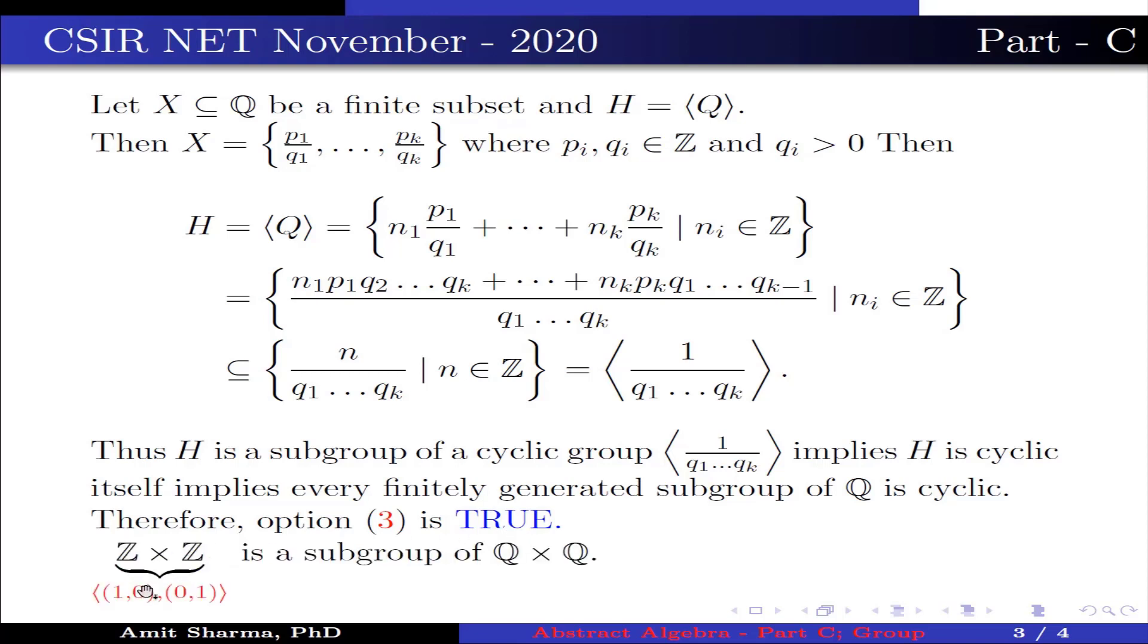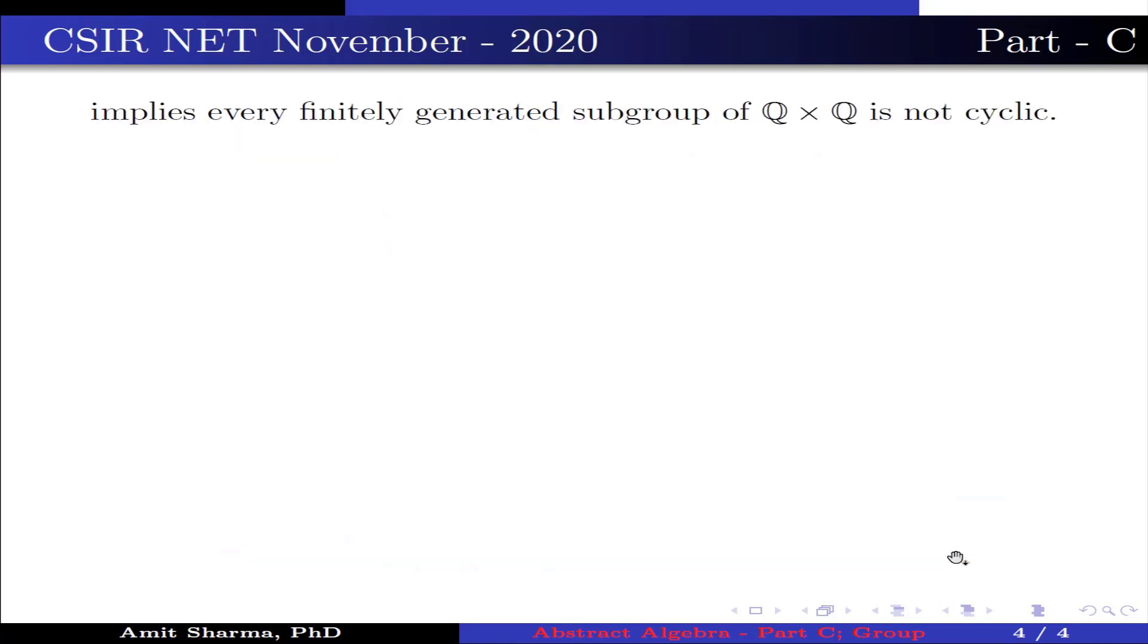Now Z × Z, which is generated by (1,0) and (0,1), is a subgroup of Q × Q. But Z × Z is not cyclic. This implies Q is not isomorphic to Q × Q. This implies option 4 is false.